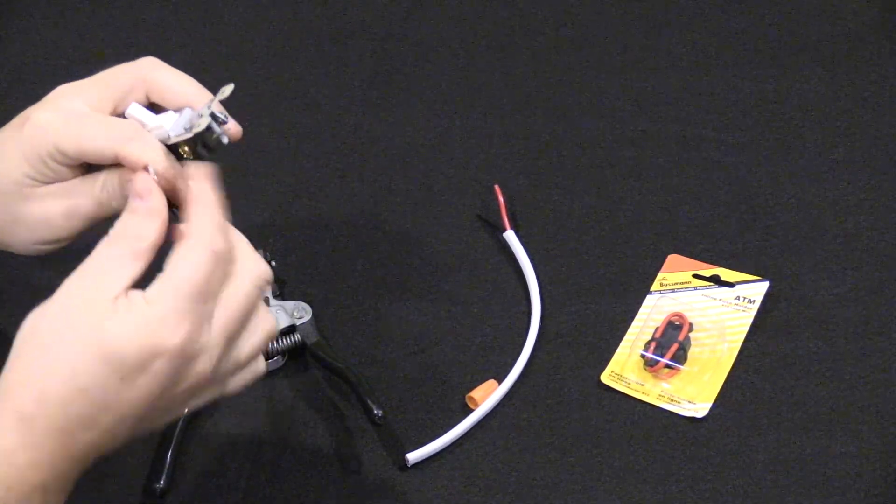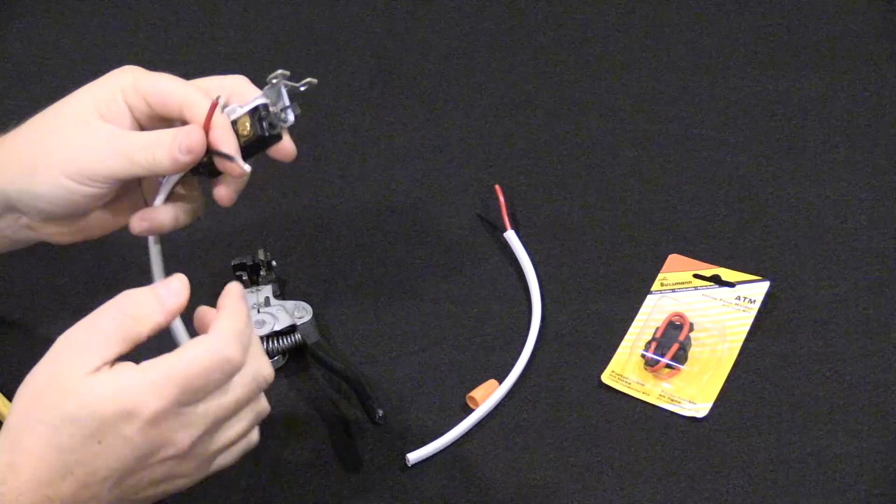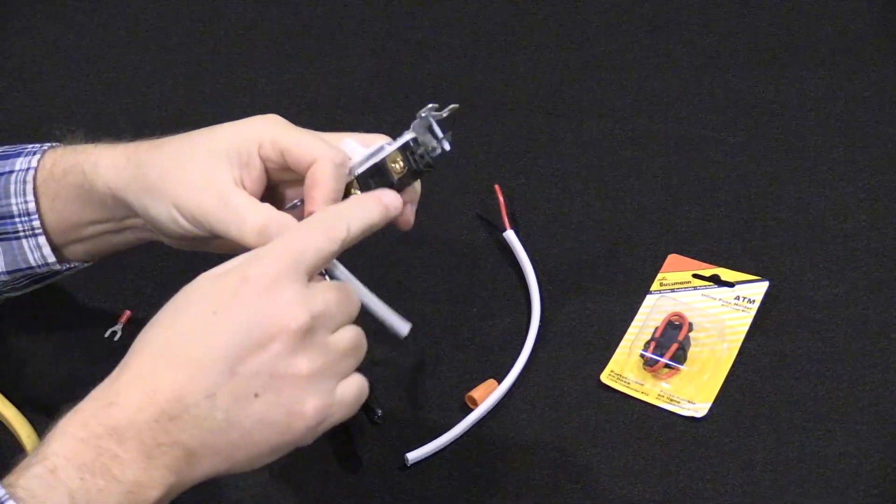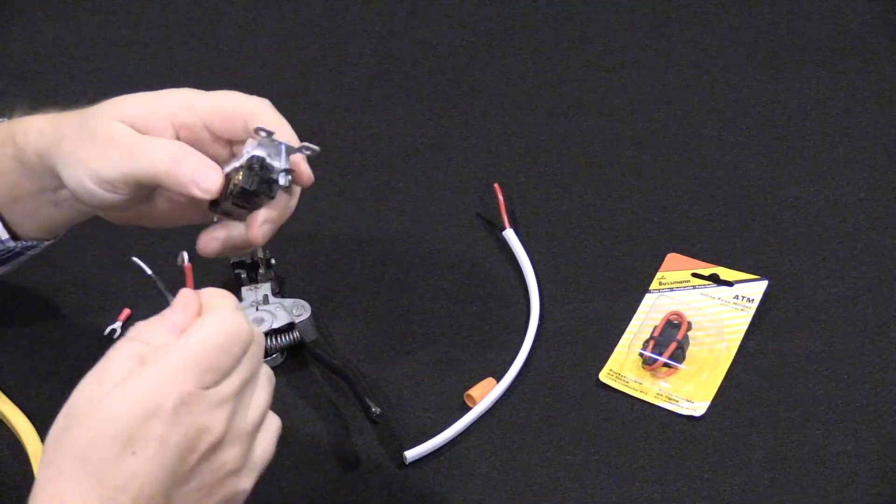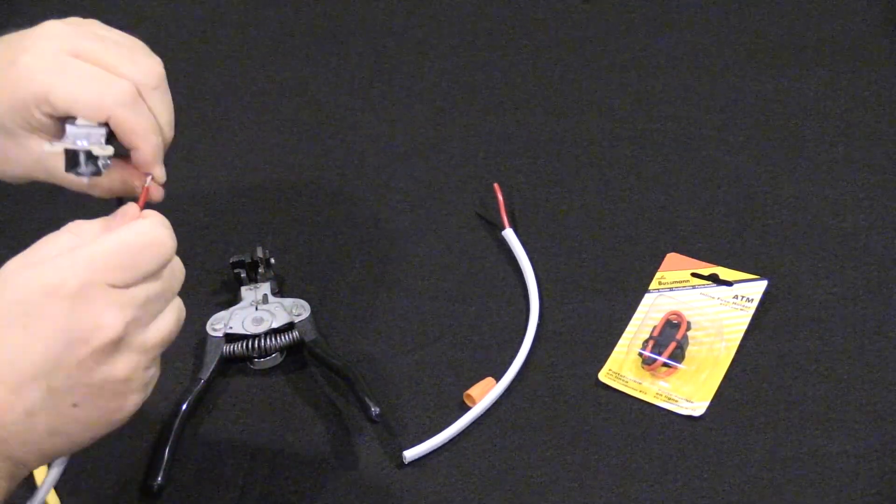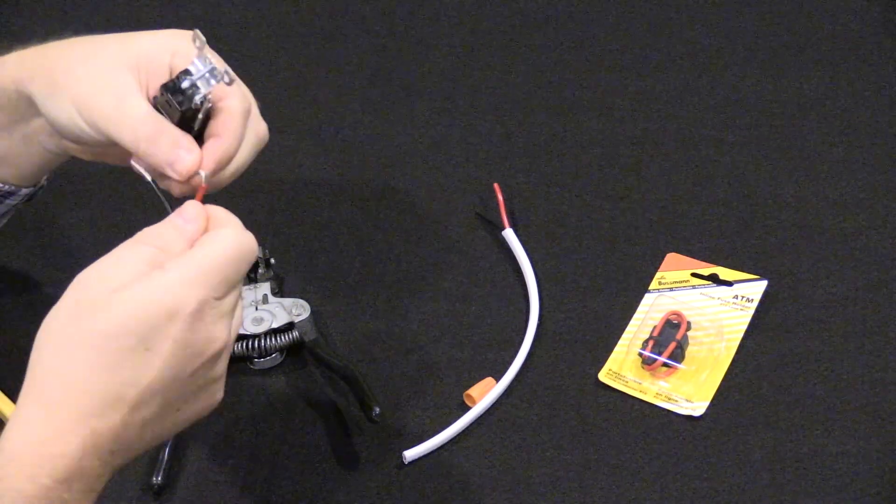You can take some pliers or something and you just clamp it on the end, and then you screw it on inside of this. A lot of people, some people solder, use a soldering gun and solder the wire in there.